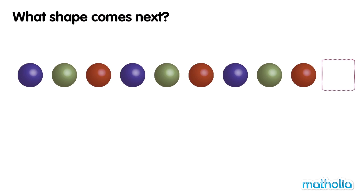What shape comes next? This pattern shows a change in colour. The repeating part of the pattern is blue sphere, green sphere, red sphere. The next shape after red sphere is blue sphere.